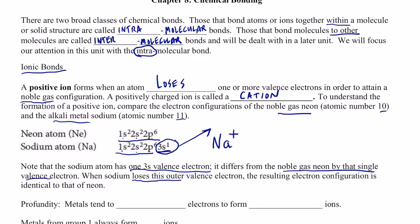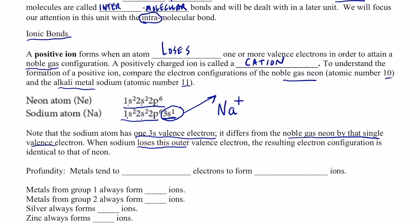So profundity. That means this is very important, folks. Metals tend to lose electrons to form positive ions. Another way of saying a positive ion is simply by saying cations.